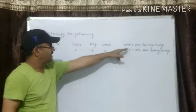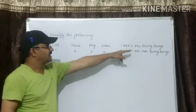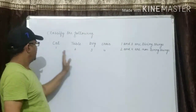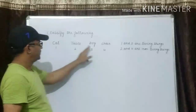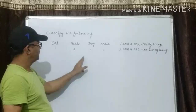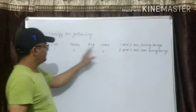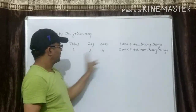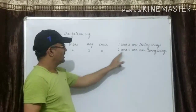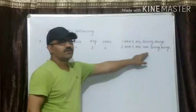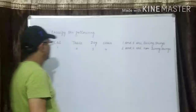One and three — cat and dog — are living things. Two and four — table and chair — are non-living things.